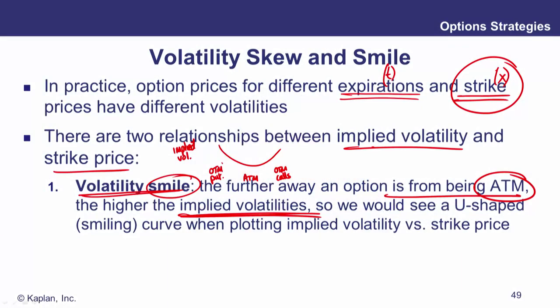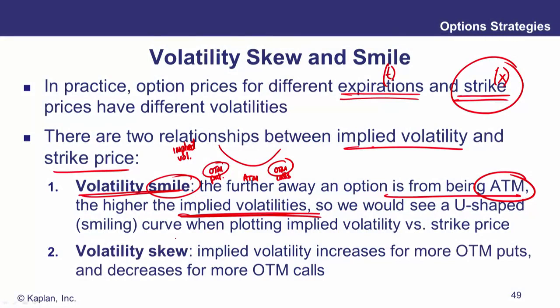This might be quite natural. Out-the-money options — the underlying needs to move in order for those options to pay off. So the people buying those options are expecting a big move, and that's what they're pricing into the options. That might be a rational explanation. But if we haven't got a balanced concern about big moves down for puts and big moves up for calls, that's when we might see a volatility skew.